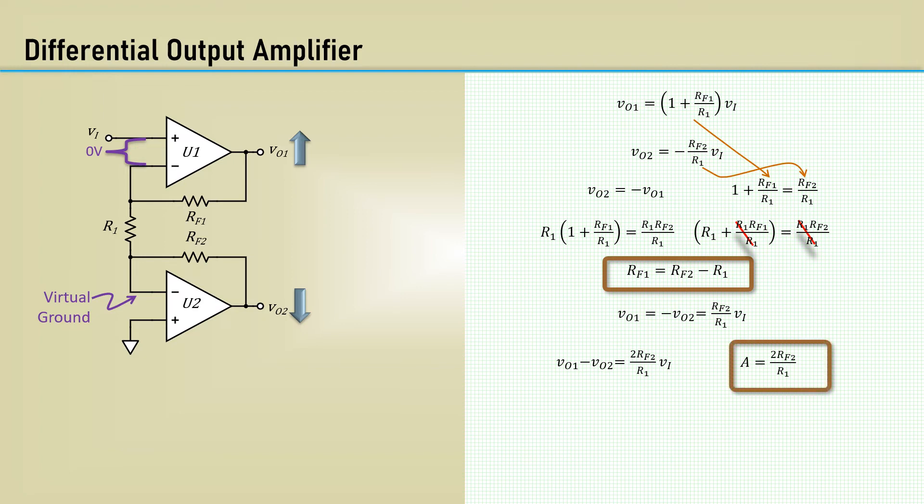Let's design it for a gain of 4. We will let RF2 equal 20k, R1 comes out as 10k, and RF1 also comes out as 10k.